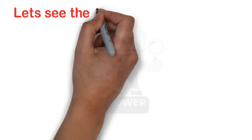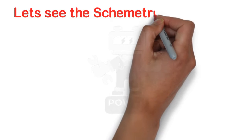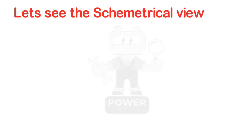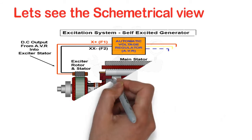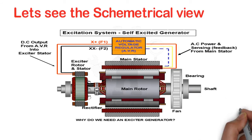Let's see the symmetrical view. In this simple self-excited generator, it takes AC power sensing feedback from the main stator, gives it to the Automatic Voltage Regulator (AVR), and the regulator gives the output as DC — two wires, positive and negative — to the exciter rotor and stator. After that, the diodes convert the three-phase AC supply into DC and connect it to the main rotor.